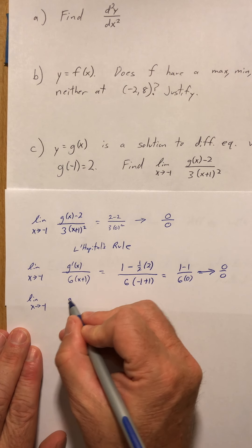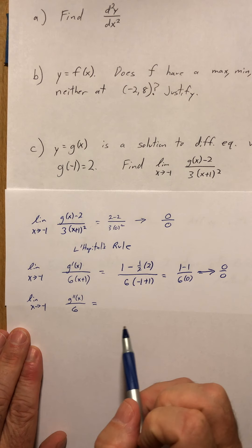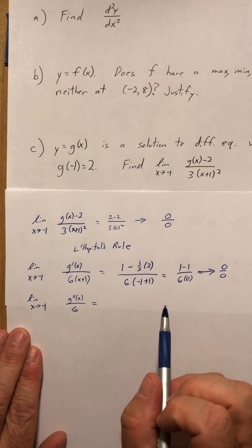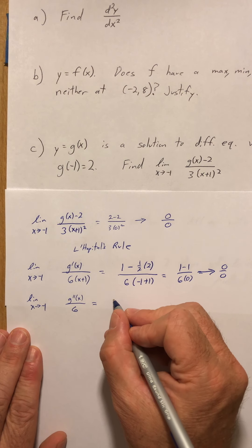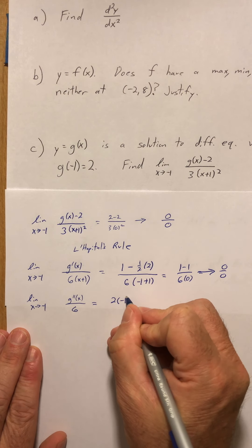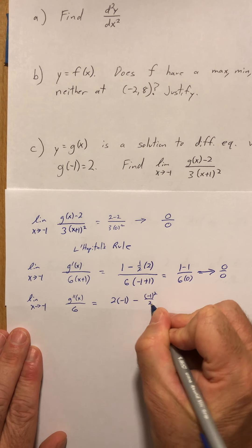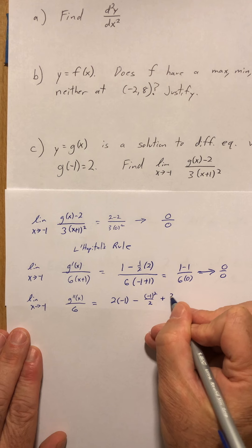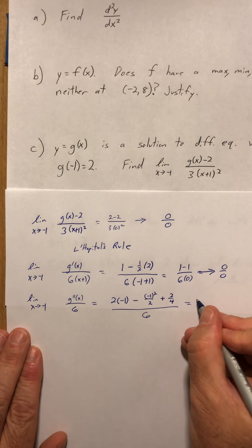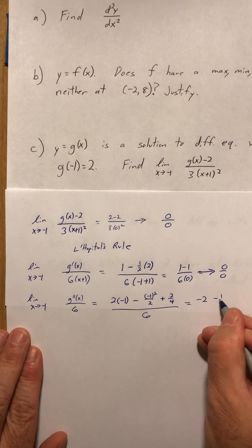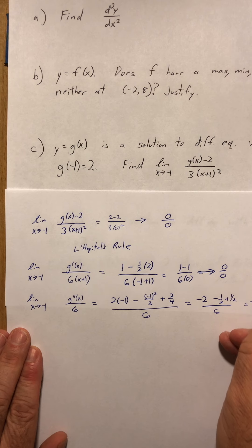Applying L'Hôpital's rule a second time, I get g double prime of x over 6. Using the second derivative formula from part a, I get 2 times negative 1, minus negative 1 squared over 2, plus 2 over 4, all over 6. That's negative 2 minus a half plus a half, all over 6. I end up with negative 1 third as my limit.